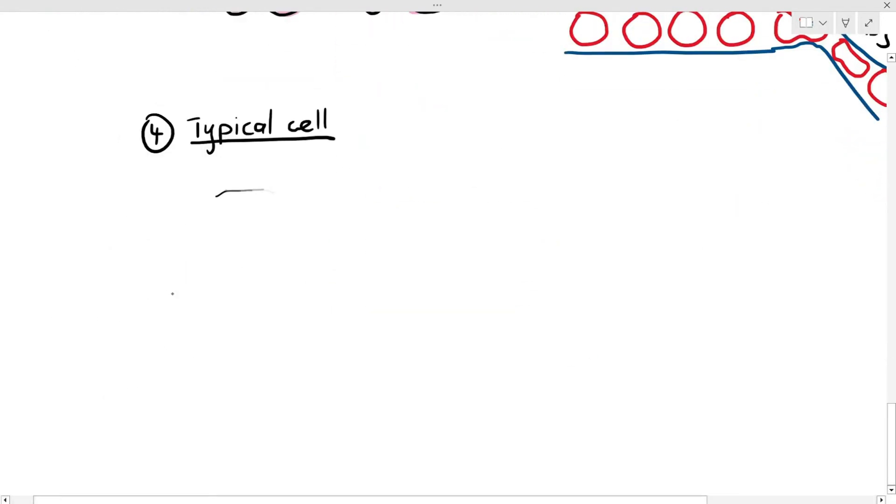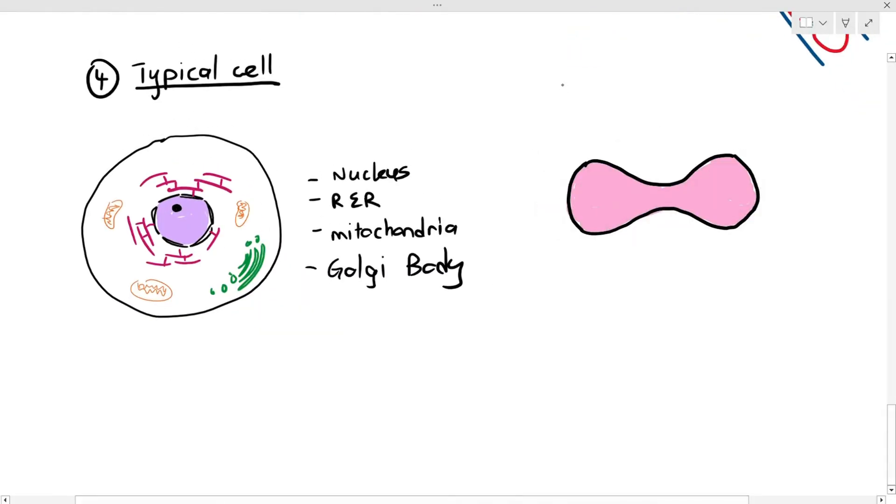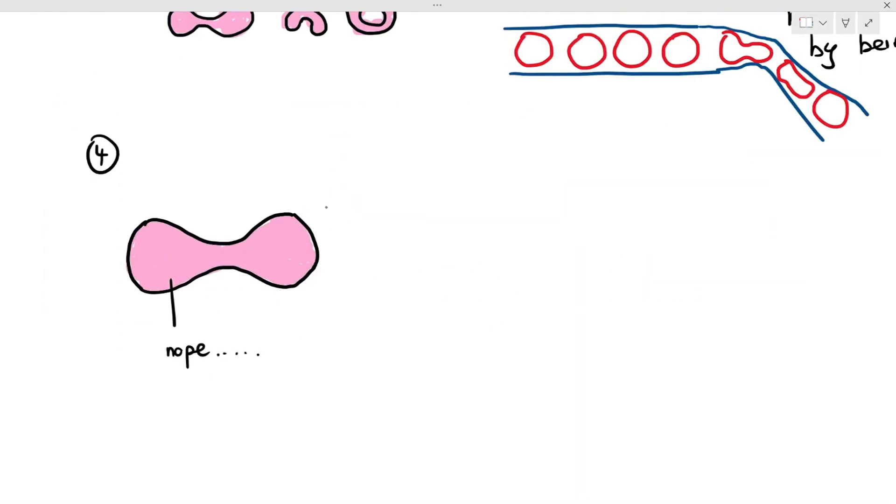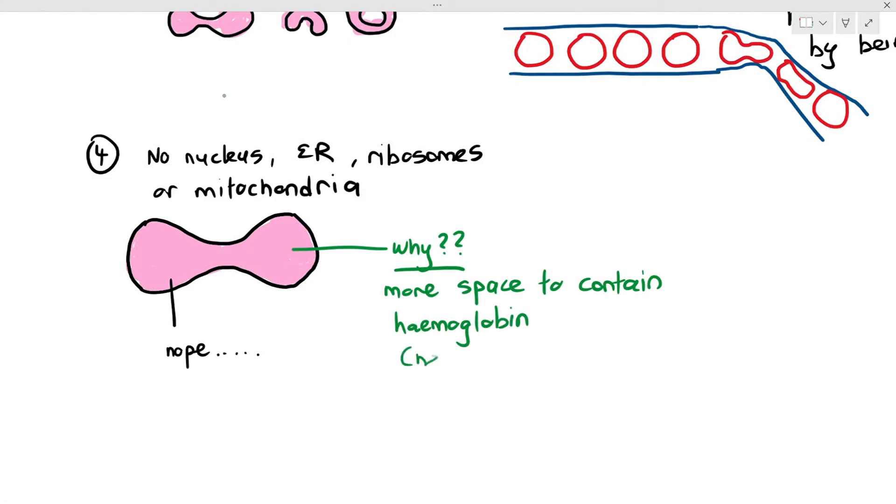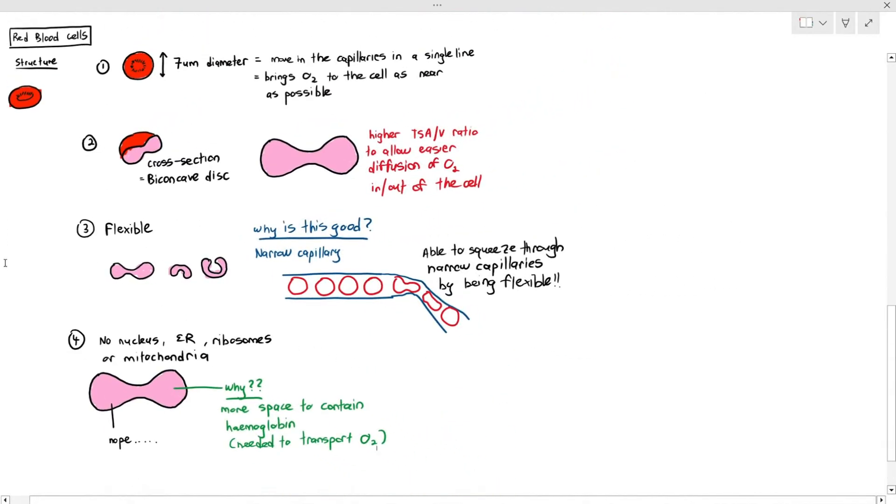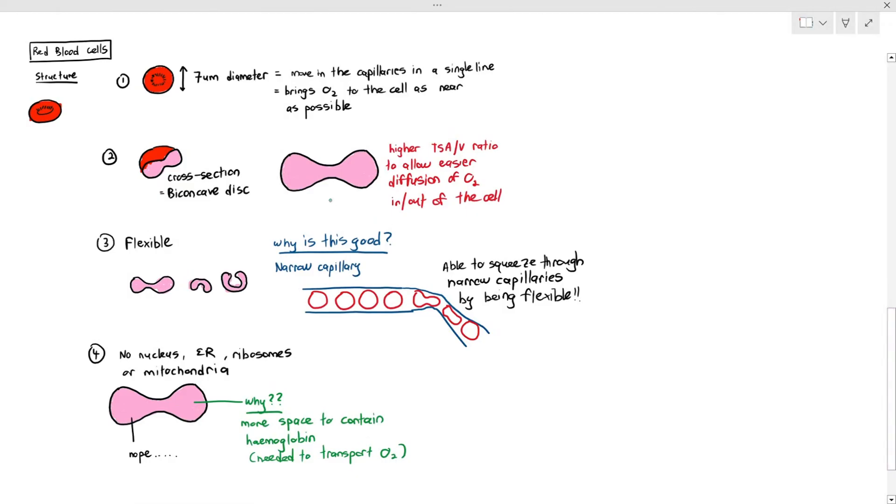Now, the last thing that we have to understand about the red blood cell is what goes on within the red blood cell. So inside a typical cell, we will have a nucleus, rough ER, Golgi apparatus, we'll have mitochondria, and all these other organelles. However, inside a red blood cell, it doesn't have any of those organelles at all. The reason it doesn't have a nucleus, it doesn't have endoplasmic reticulum, ribosomes, mitochondria, Golgi body, none of that at all. The reason is because it wants to have more space to contain hemoglobin, and the more hemoglobin it has, the more oxygen it can transport. These are the four things that you will have to know about the red blood cells. The fact that it is 7 micrometers in diameter, it has a biconcave disc shape, it is flexible, and the fact that it has no nucleus, ER, ribosomes, or mitochondria.